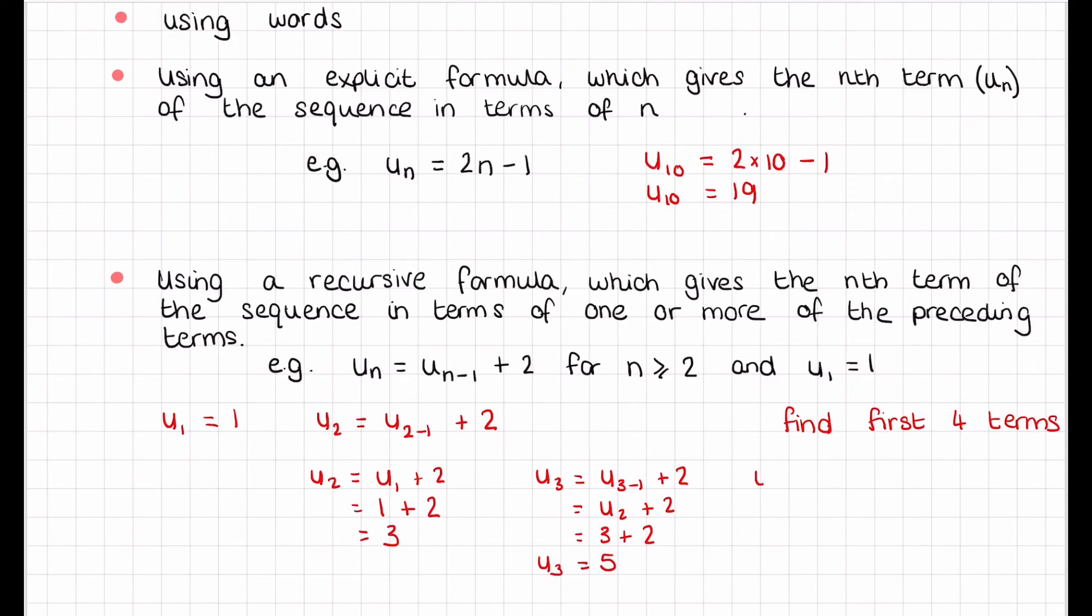For u4, we have u(4-1) + 2, which is u3 + 2. This equals 5 + 2, which equals 7. So our first four terms are 1, 3, 5, and 7.